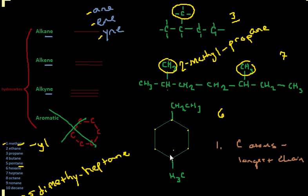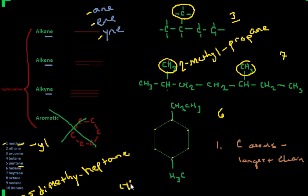Let's move on to our last one now. The ones we did up here were straight chain structures. Now down here, obviously this is different — this isn't a straight chain. Because it's enclosed, it's like a circle. And so the naming that we use for that is cyclo — that's just a prefix that we put in there.